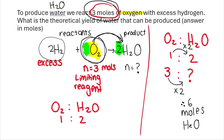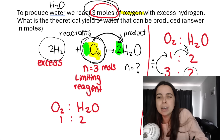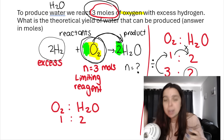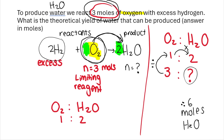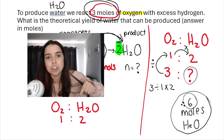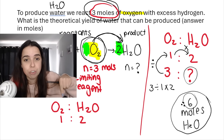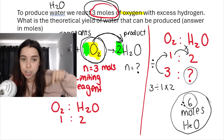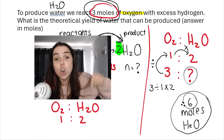Another way to work with ratios: divide on the side, times on the top. So you go 3 divided by 1 times 2, which also gives 6. The theoretical yield of water that can be produced is 6 moles. Note that what goes into the mole ratio is the limiting reagent — in this case oxygen — and the product we're looking for.